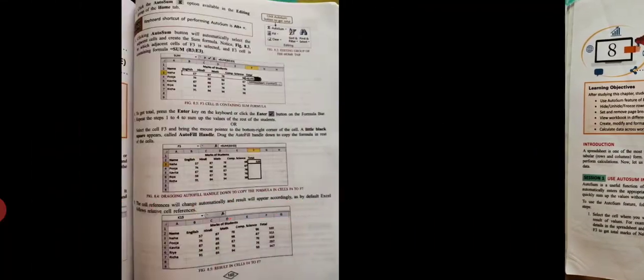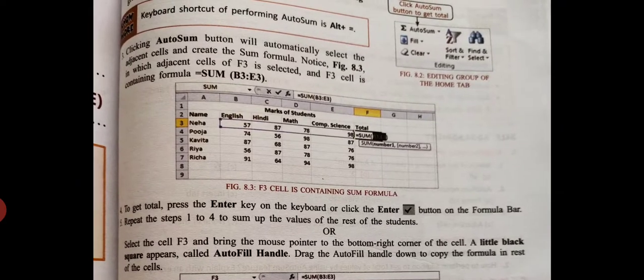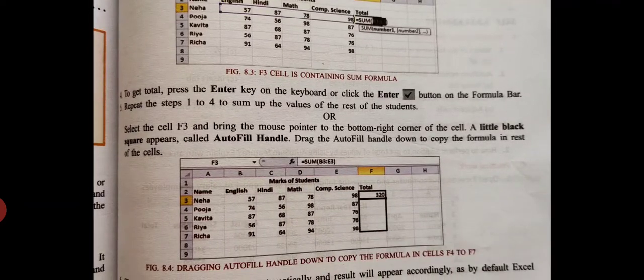Now here are steps given on how to implement AutoSum, and the keyboard shortcut is also given. AutoSum is Alt plus equals to. If you press this, it will enter the formula of AutoSum.